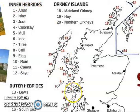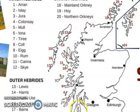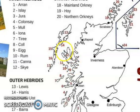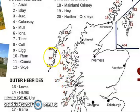In the Hebrides, you've got Arran, Islay, Jura, Colonsay, Mull, Iona, Tiree, Coll, Eigg, Rum, Canna, and the Isle of Skye, which is extremely touristic and famous. And Oban is the capital of the mainland and it's the main ferry terminal that allows you to travel to the islands by boat.